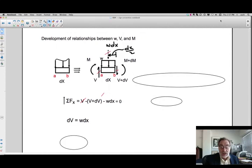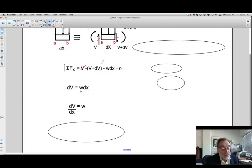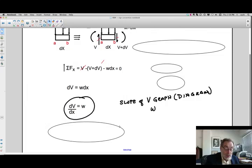Now, what we're going to do is note two different things. First of all, dividing through by dx, I've got dV/dx is equal to w. So what that means is that the slope of the V graph or diagram at a location is equal to the w, the distributed load at that location. If there is no distributed load, the slope is zero. If there is one, if it's positive or negative, that's what the slope is going to be. Now, that is a very important relationship. This is very important.